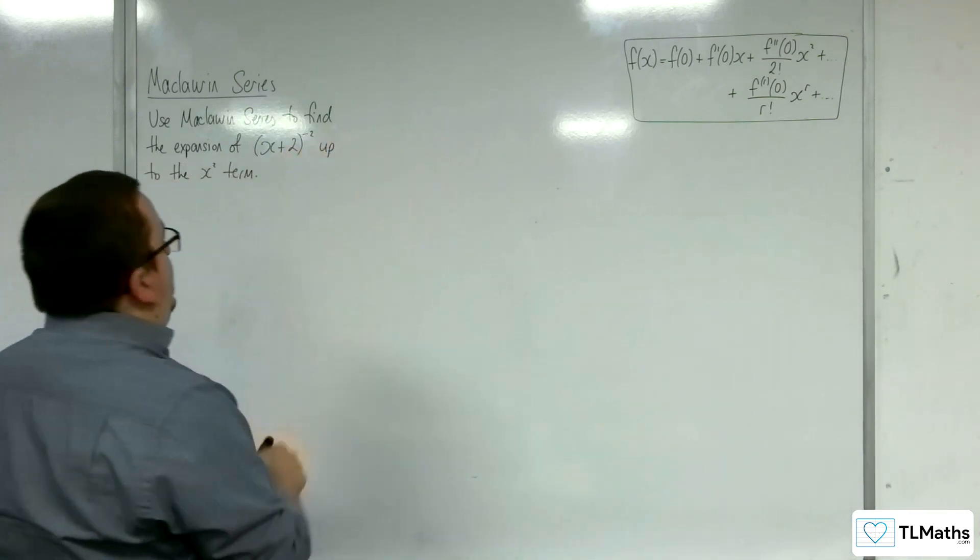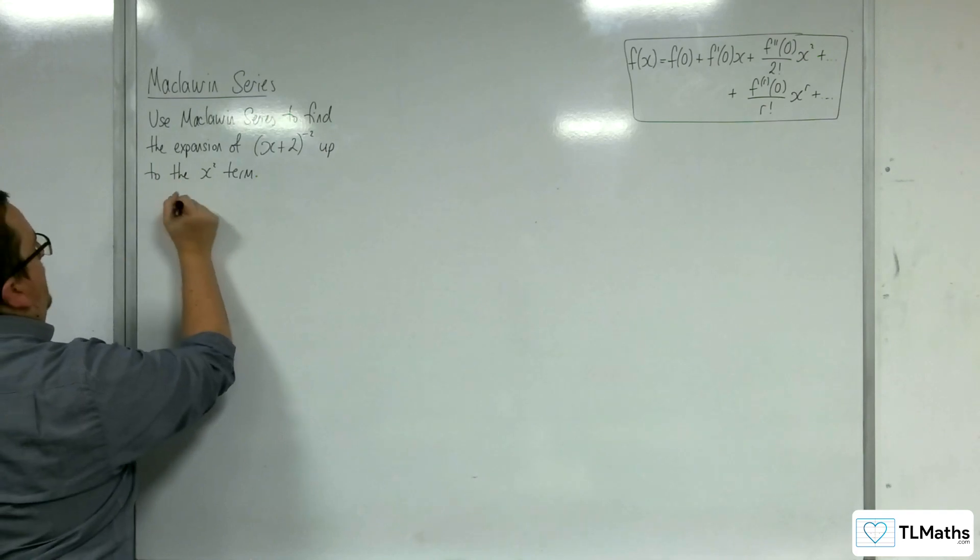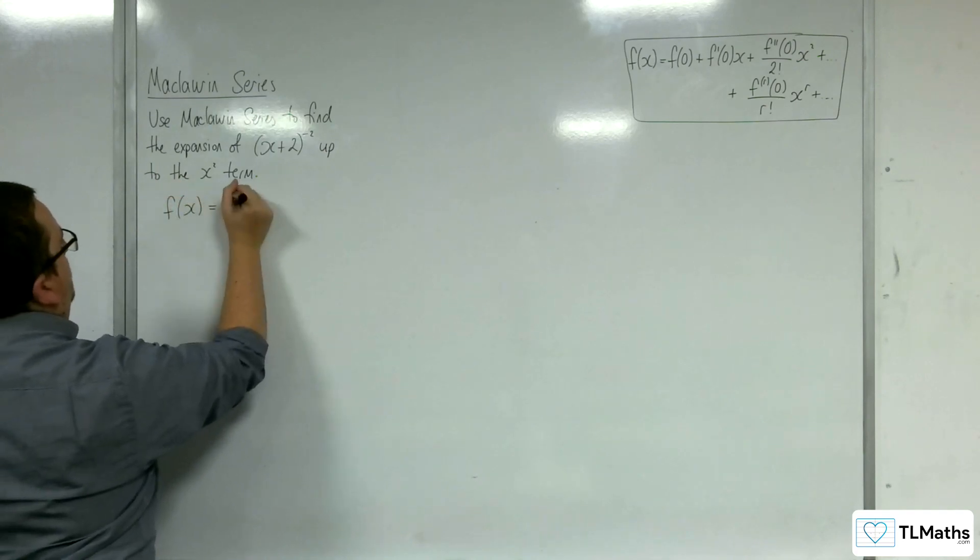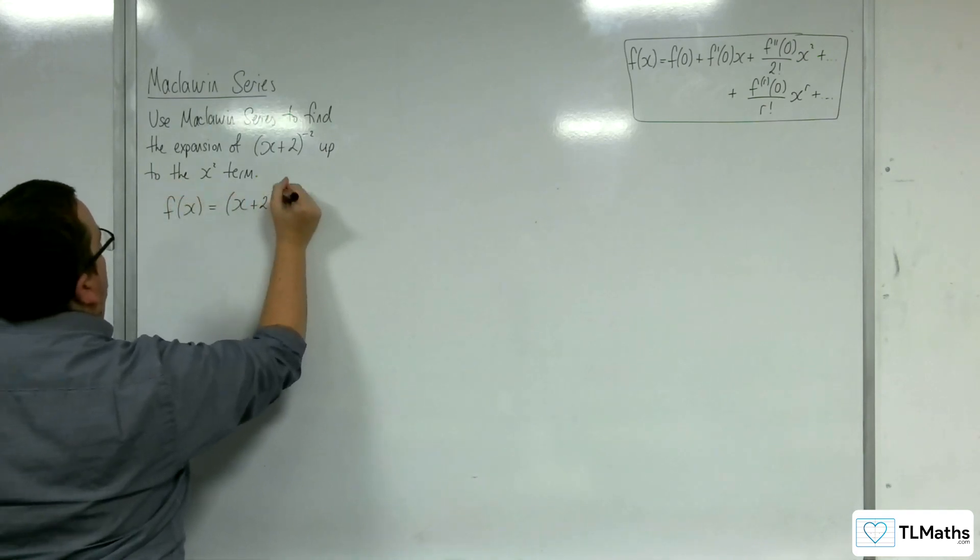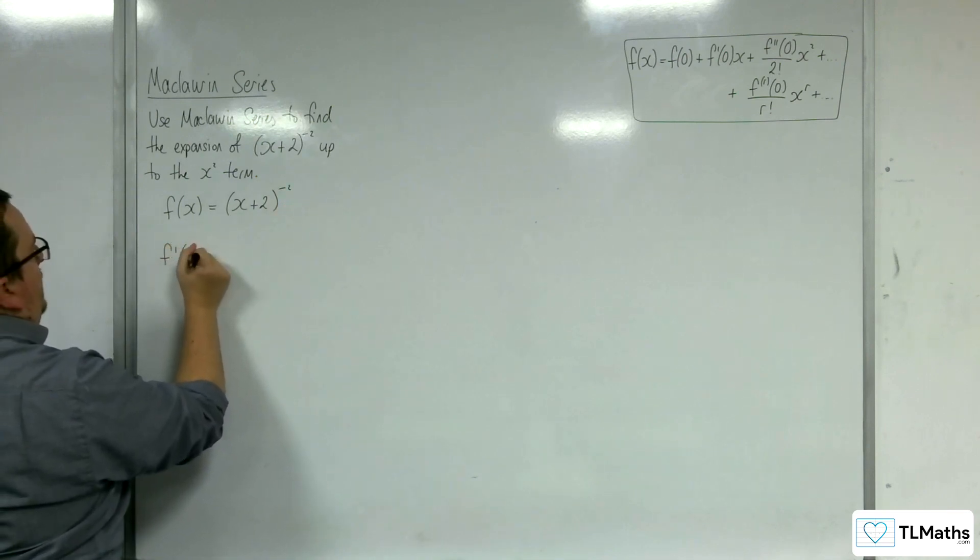So what we're going to need then is to say, right, I've got f(x) and I'm going to have that as (x+2)^(-2). And I'm going to need to keep on differentiating this.